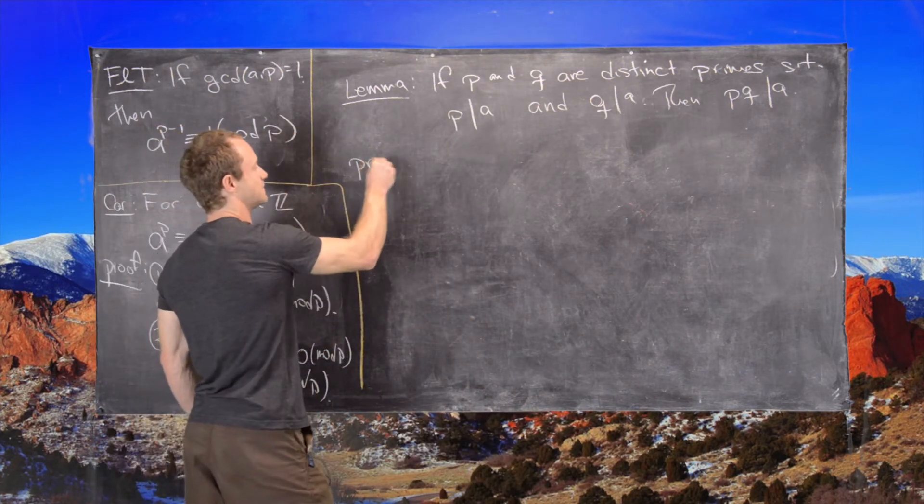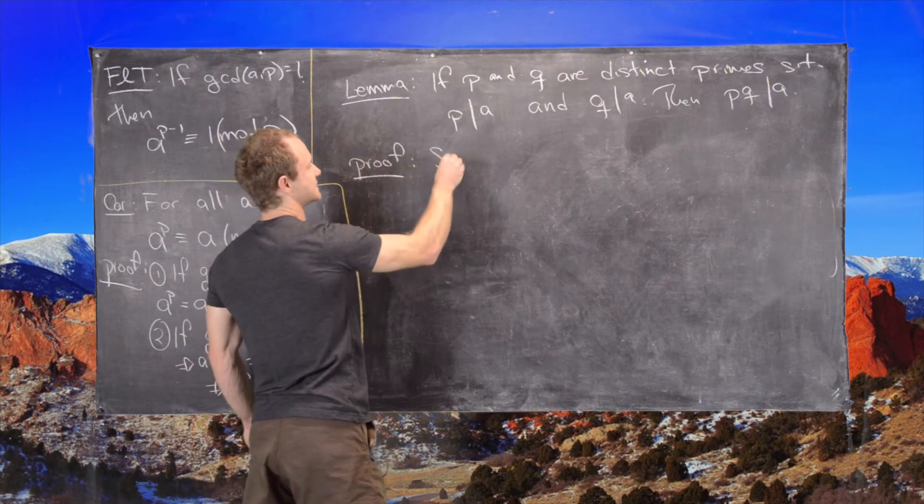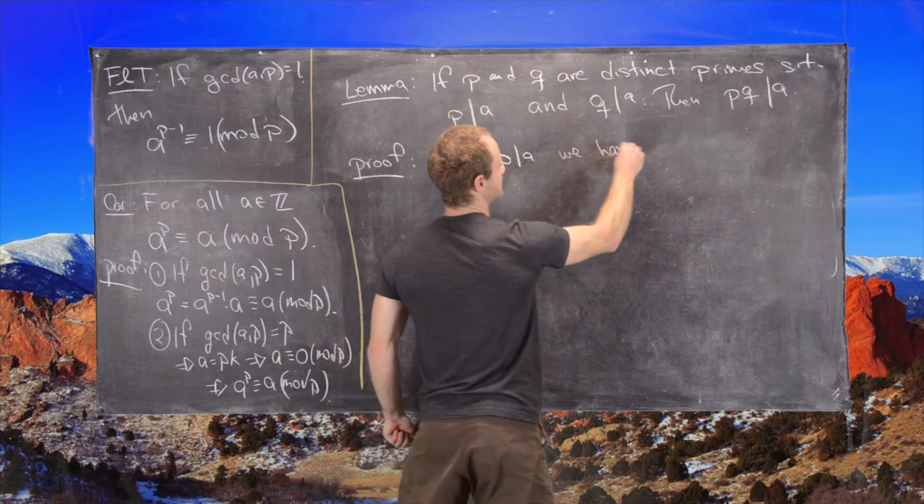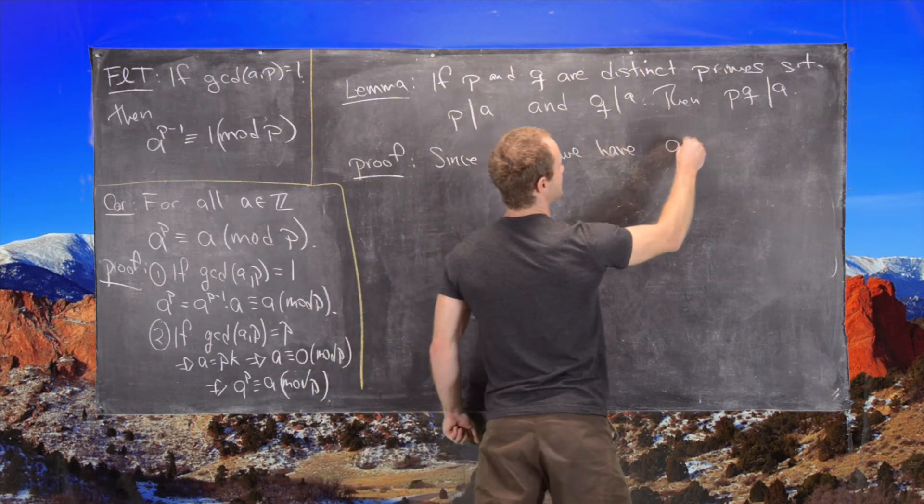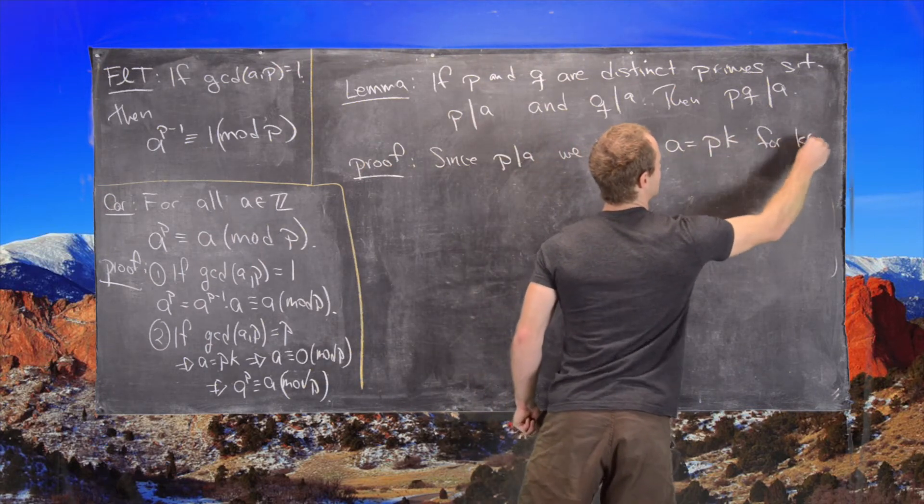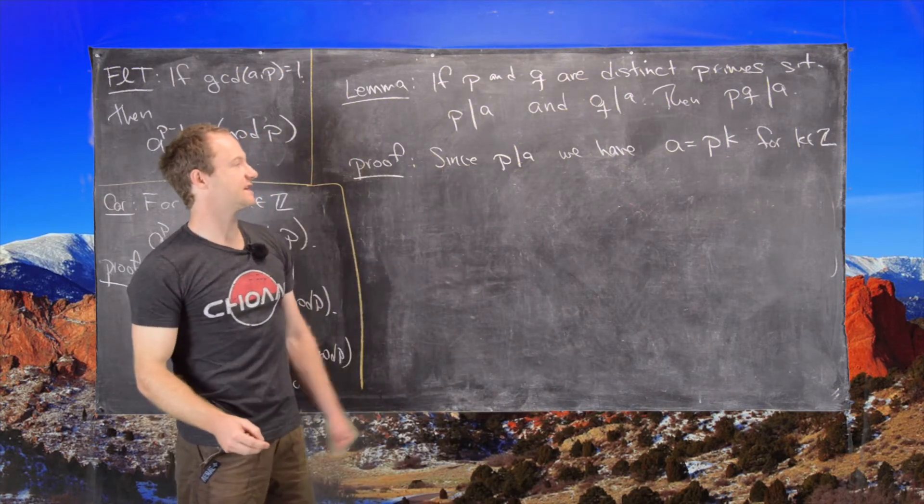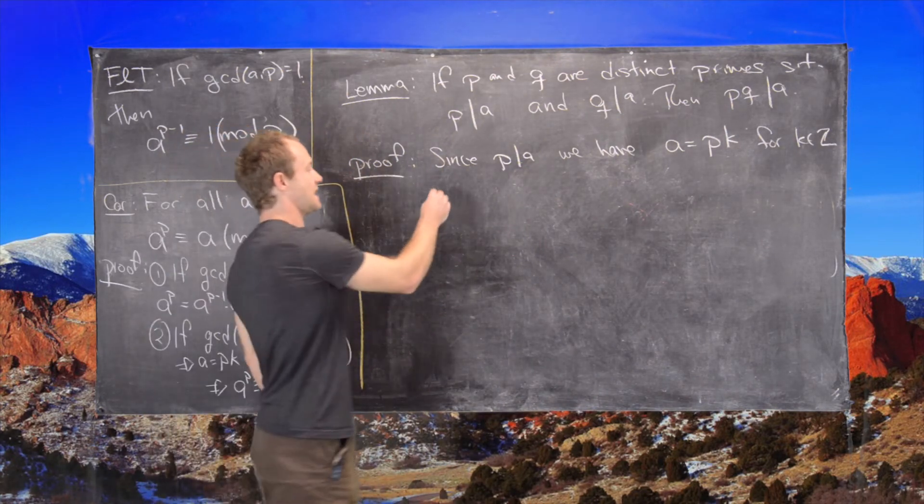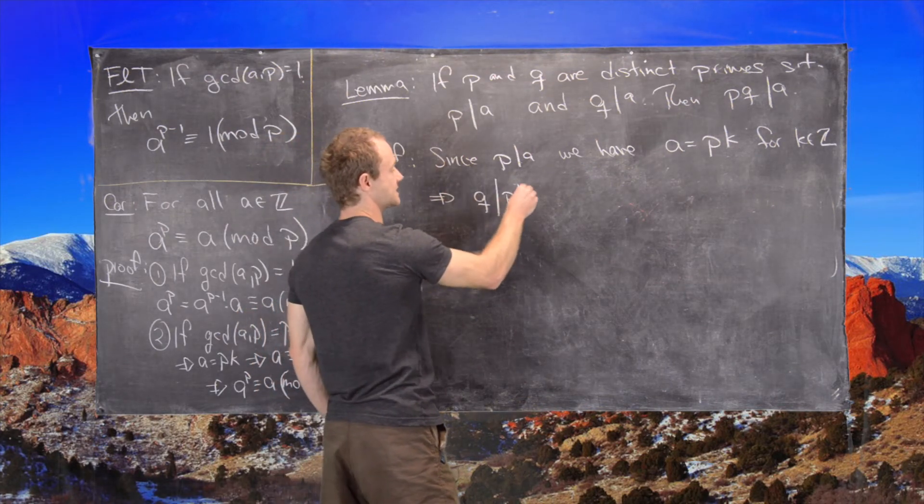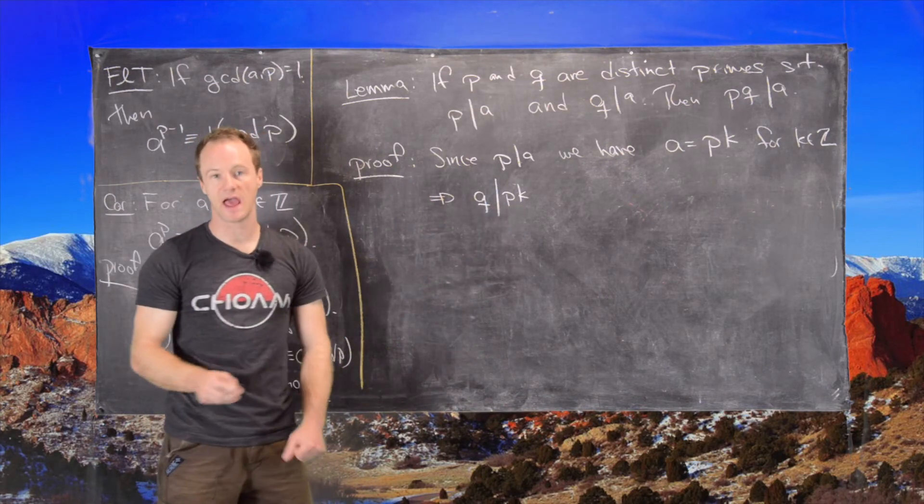So let's look at the proof here. So since P divides A, we have A equals P times K for some integer K in Z. And then, since Q divides A, that tells us that Q divides P times K.